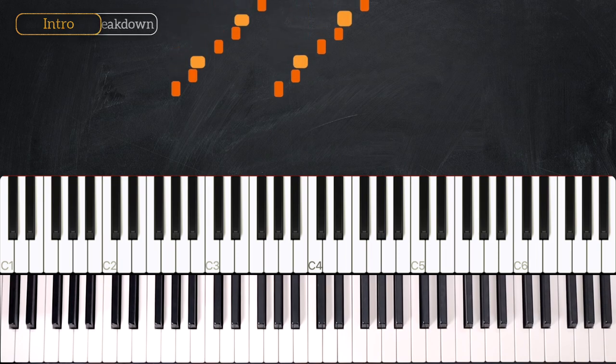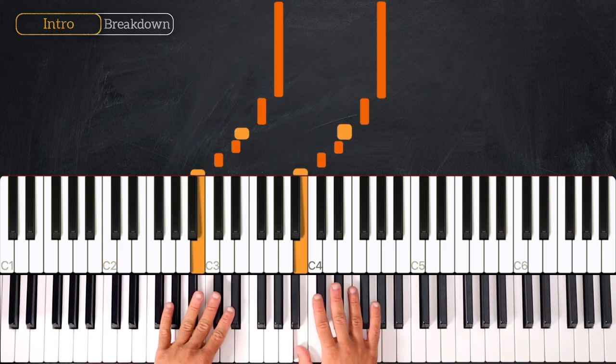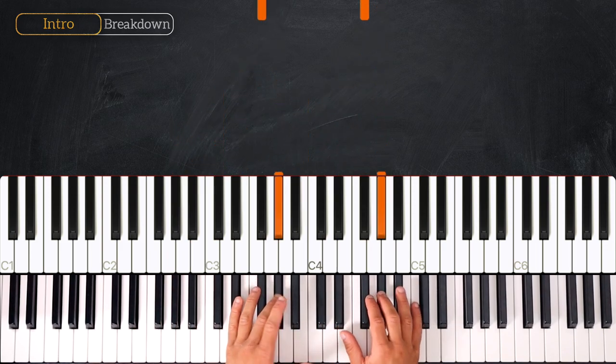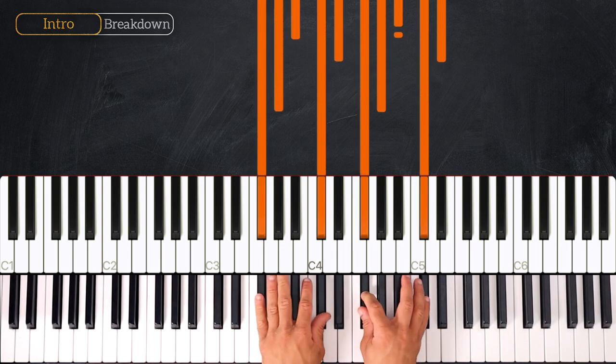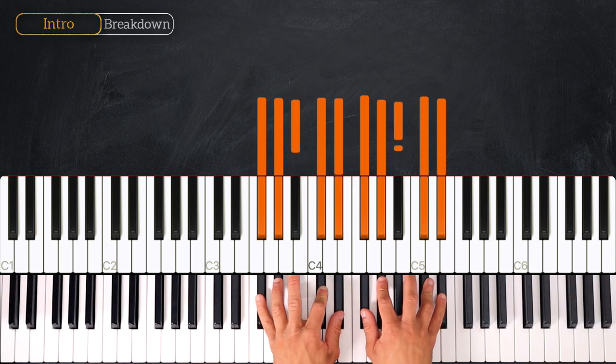We are in the key of G sharp minor. So we have five sharps, which are F, C, G, D and A.